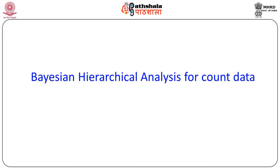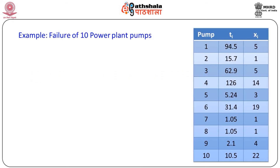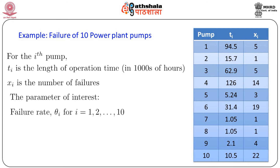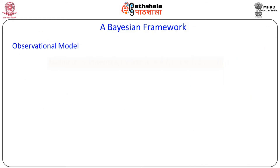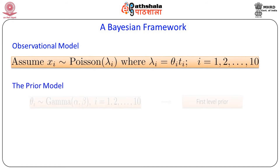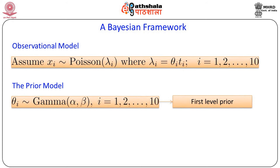We now move to Bayesian hierarchical analysis for count data, which is frequently encountered in real life. The example involves failures of 10 pumps in a plant: tᵢ is the length of operating time and xᵢ is the number of failures. The parameter of interest is the failure rate θᵢ. In the Bayesian framework, we assume xᵢ ~ Poisson(λᵢ), where λᵢ = θᵢ × tᵢ represents the average number of failures for pump i. The first-level prior is θᵢ ~ Gamma(α, β), and α has an exponential prior. Different types of priors can be explored for comparison.